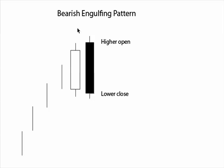The psychology behind the bearish engulfing — opposite of the bullish — is that you get an open and close higher on the first candlestick in the pattern, consistent with basically the rest of the price action before it. Then you get a higher open, and initially you're anticipating another move up, but then price moves down and closes below the open of the previous candlestick, so that the real body completely engulfs the last bullish candlestick's real body. And that's the bearish engulfing pattern.